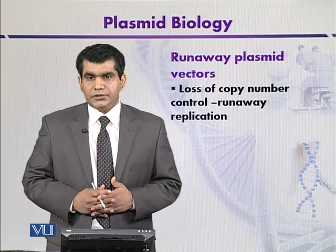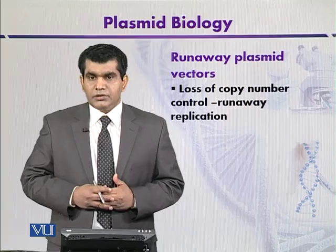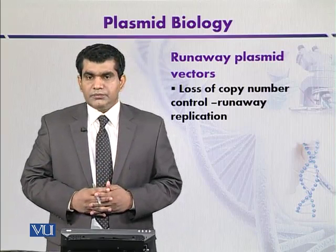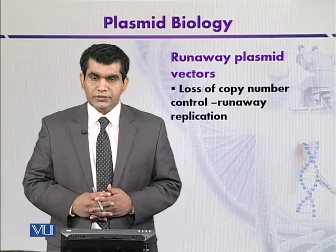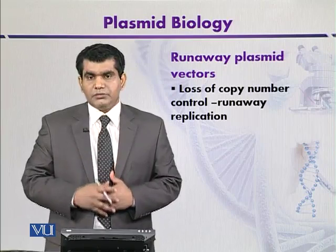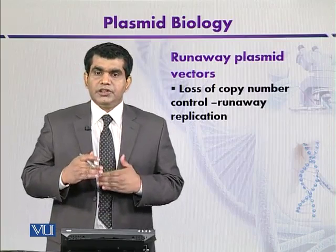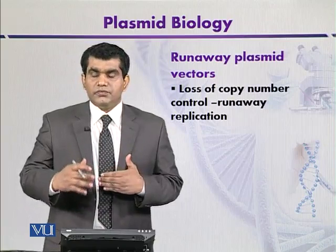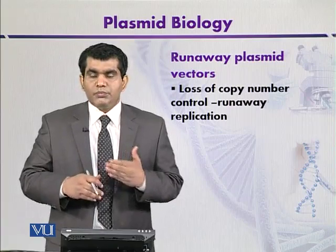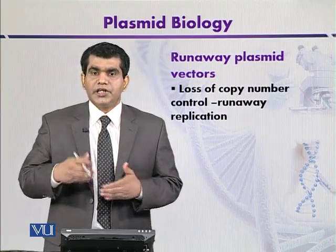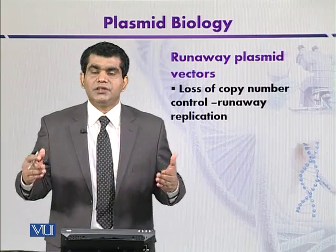One solution is to use plasmids called runaway plasmids. Genes are cloned in these plasmids that can be maintained at a moderate copy number at 30°C, so the copy number will be maintained at optimum and will not disrupt the physiology of the cell. But when temperature is increased from 30 to 35°C, replication will increase and more protein will be produced. Within the first few hours, this high expression is not lethal to the cell.